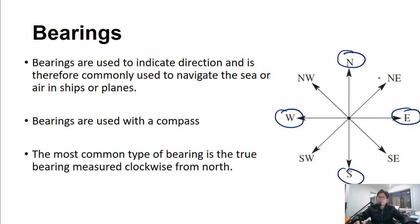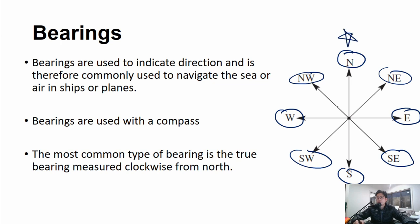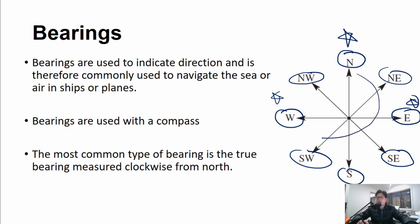For the points in between, we have north-east, south-east, south-west, and north-west. We always start with the direction on the top or bottom and then read the one on the right or left second. So it's north-east, south-east, south-west, and north-west. Finally, the most common type of bearing is the true bearing, and it is measured clockwise from north.